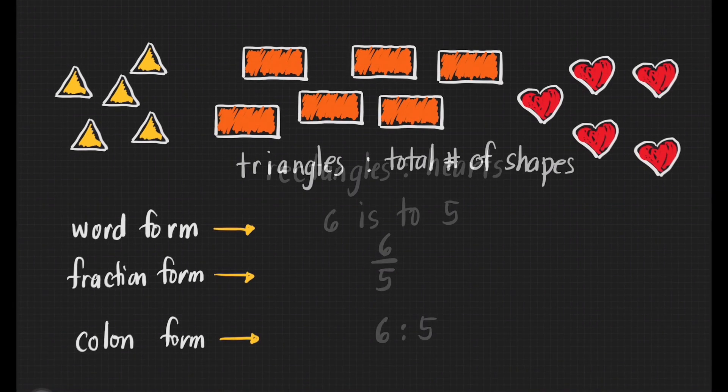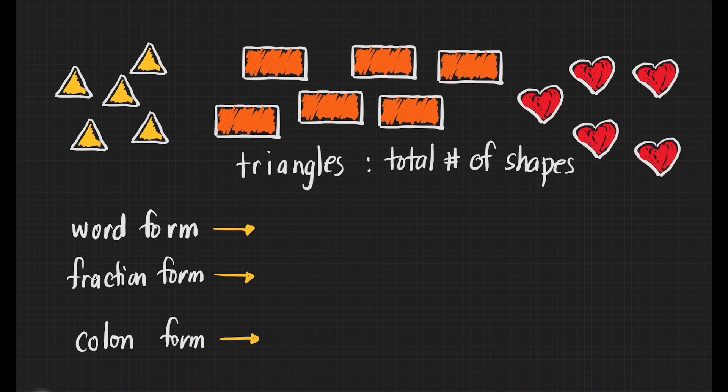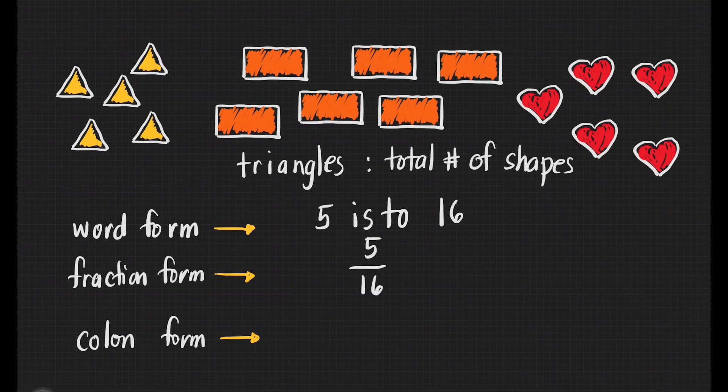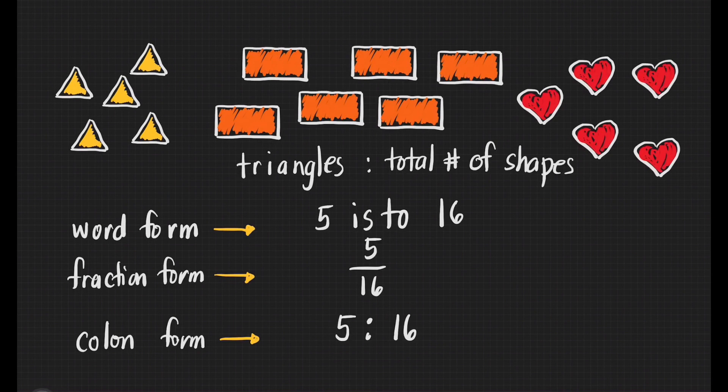Let's find the ratio of the number of triangles to the total number of shapes. For our word form, that will give us 5 is to 16. And for the fraction form, that gives us 5 sixteenths. And the colon form, that's 5 is to 16.